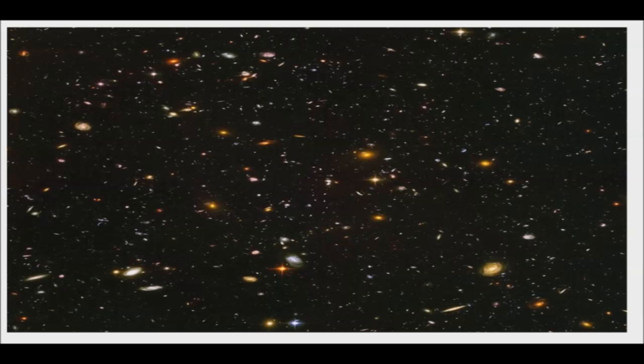As an irregular galaxy, IC-10 lacks the majestic shape of spiral galaxies such as the Milky Way, or the rounded ethereal appearance of elliptical galaxies. It is a faint object, despite its relative proximity to us of 2.2 million light-years.